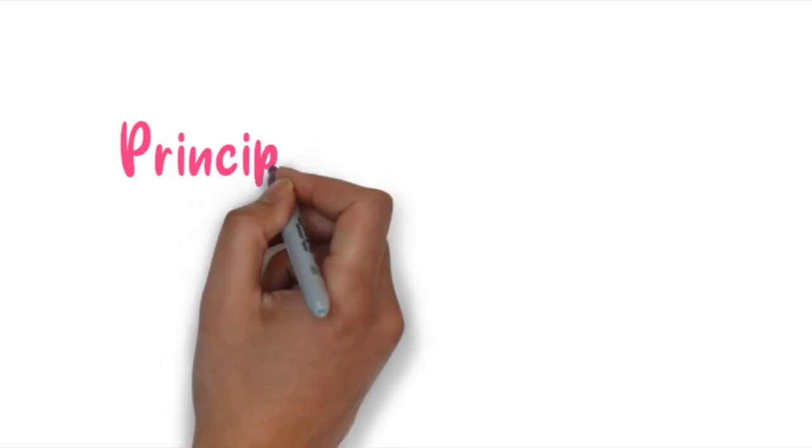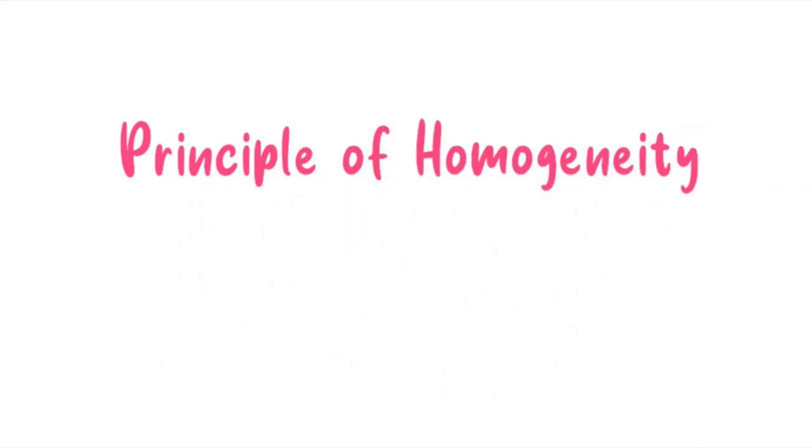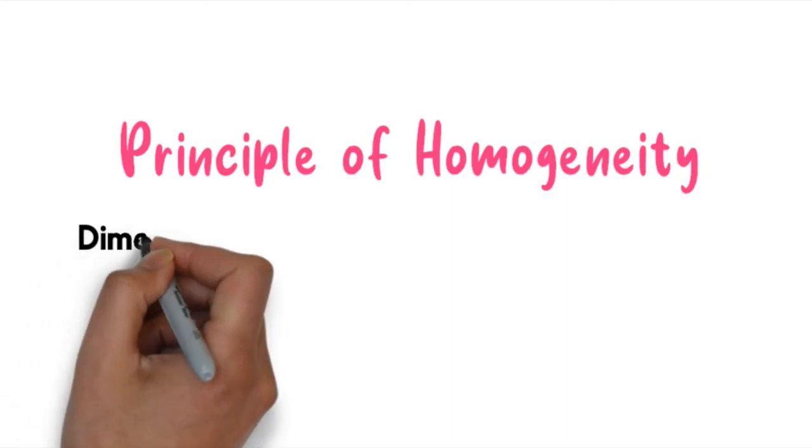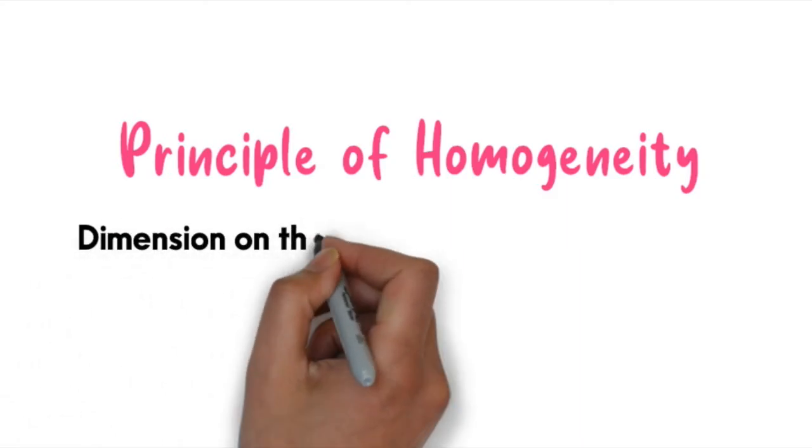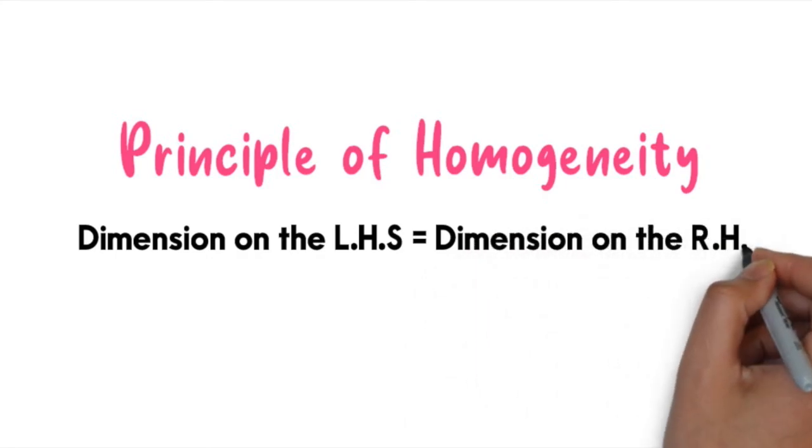So what does principle of homogeneity state? It states that the dimension on the left-hand side must equal to the dimension on the right-hand side.